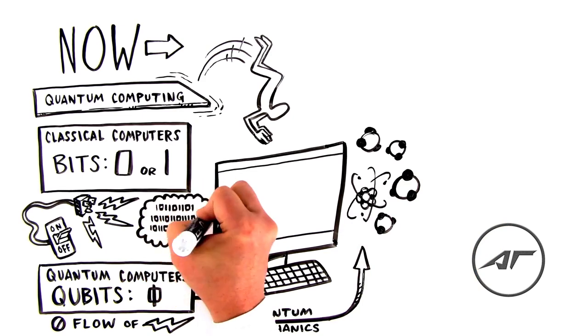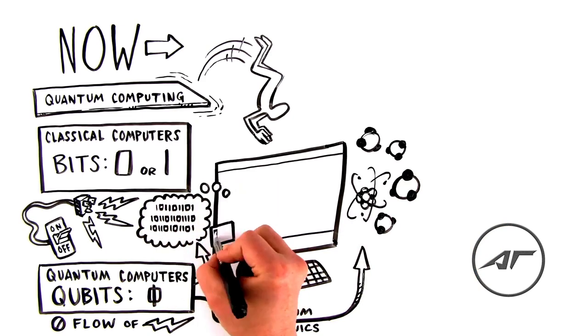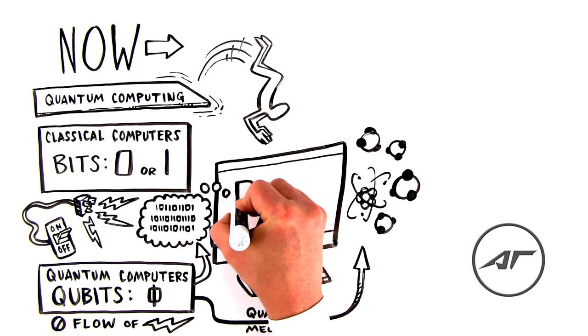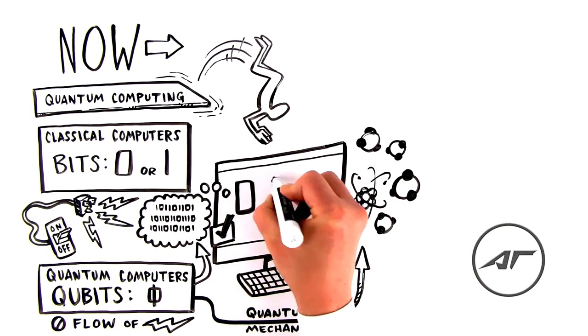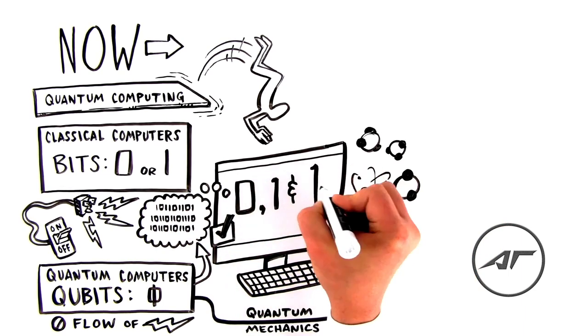Like classical computers, quantum computers can manipulate zeros and ones, but they can also manipulate more sophisticated states, like the combination of zero and one at the same time.